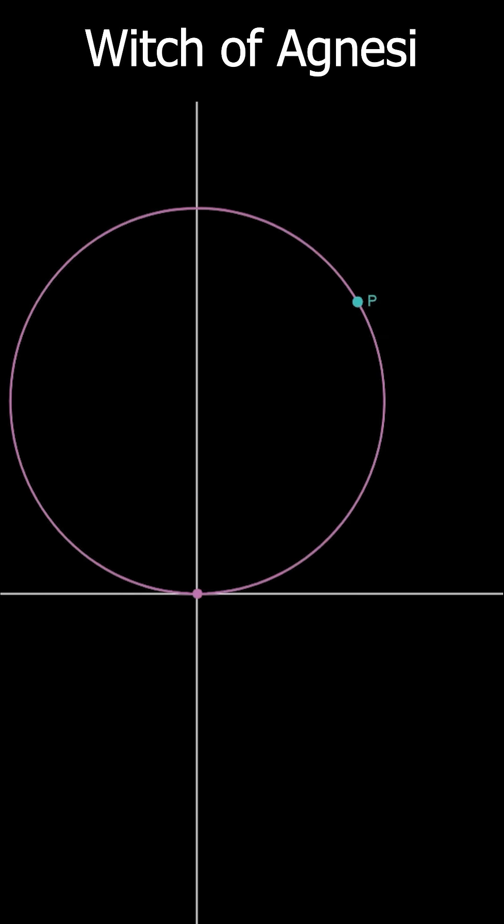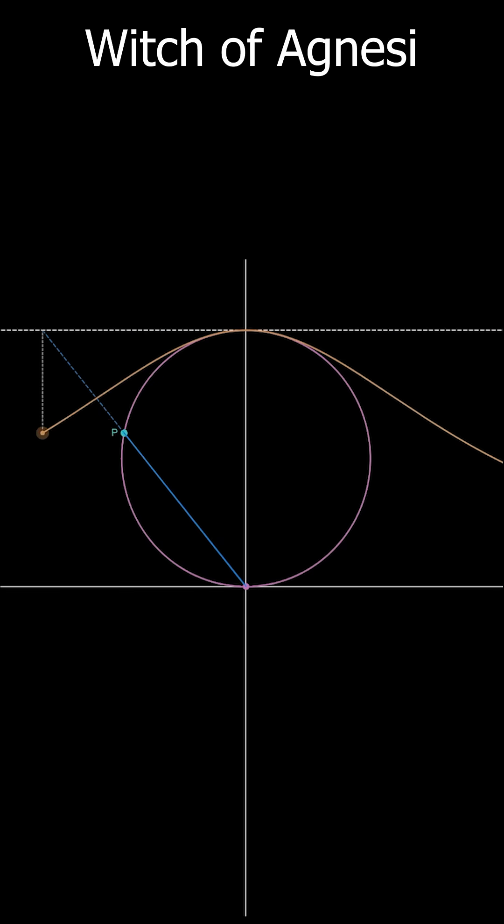Now we can construct it geometrically by starting with the circle of radius A, then taking a point on the circle and drawing the segment from the origin out to the point P. If you put a horizontal tangent at the top of the circle and extend our segment out until it intersects with that horizontal, finally drop it back down until it matches the height of the point P, this gives us a new point. As we move around the circle, you sketch out a curve. This is the Witch of Agnesi.